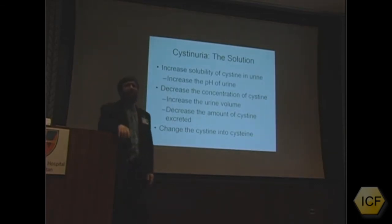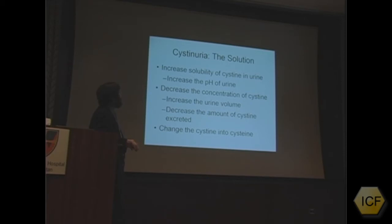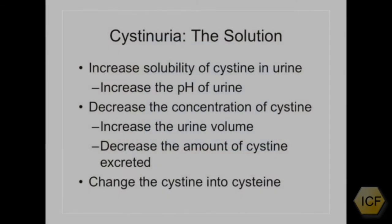The solution to this problem is to try to make the cysteine dissolve — to prevent this very precipitable amino acid from precipitating. The options are: we can increase the solubility of cysteine by increasing the pH of the urine through alkalinization; we can decrease the concentration of cysteine so there's less of it to precipitate; we can increase the urine volume by taking in more liquid; and if we could change cysteine into cystine, which is very soluble and does not precipitate, we'd also accomplish the goal.